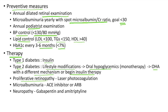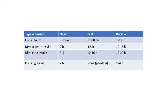For proliferative retinopathy, we can give laser photocoagulation. For microalbuminuria, we can give ACE inhibitor or angiotensin receptor blocker. For neuropathy, we can prescribe gabapentin and amitriptyline.